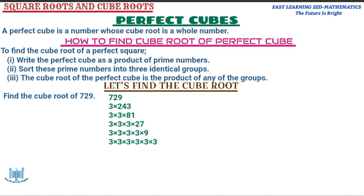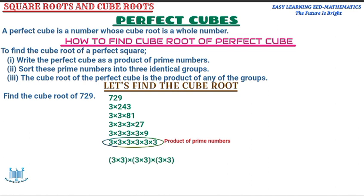I have expressed 729 as a product of prime numbers — six threes. If you want, you can verify this yourself. I've achieved step one: writing the perfect cube as a product of prime numbers. Now for step two: I'm going to group these six threes into three identical groups, with each group containing three times three.